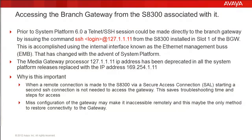In Communication Manager 5.2.1 and earlier, there is a function that allows for an SSH or Telnet connection to be made to the branch gateway that houses it. That function uses an internal VLAN known as the Ethernet Management Bus or EMB. The S8300 and the Media Gateway Processor in the old releases used IP addresses of 127.1.1.31 and .11. These have now been deprecated since System Platform 6.0.